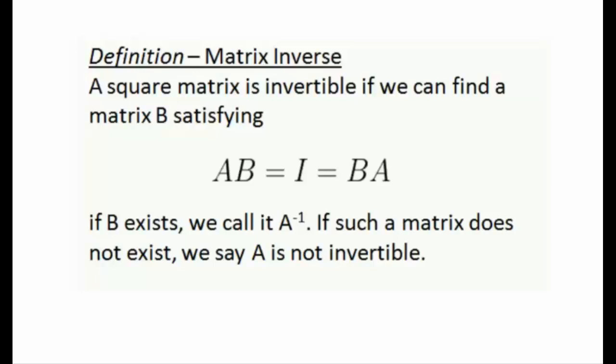We say that a square matrix is invertible if we can find another matrix B so that we have two equations that are satisfied. We need A times B to be equal to an identity matrix and we need B times A to be equal to an identity matrix as well. If this B exists then we label it as A to the power of minus 1 or A inverse. If it's impossible for us to find such a B, then we say that A is not invertible.